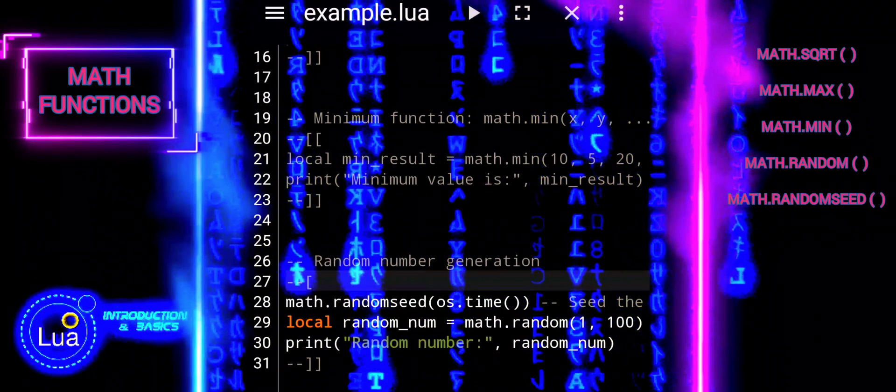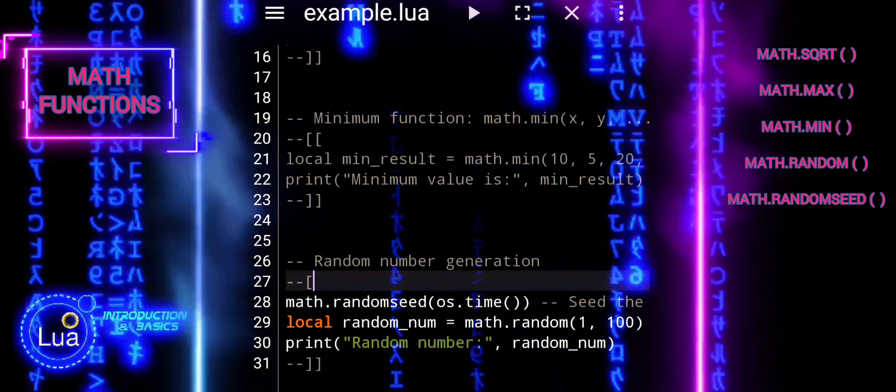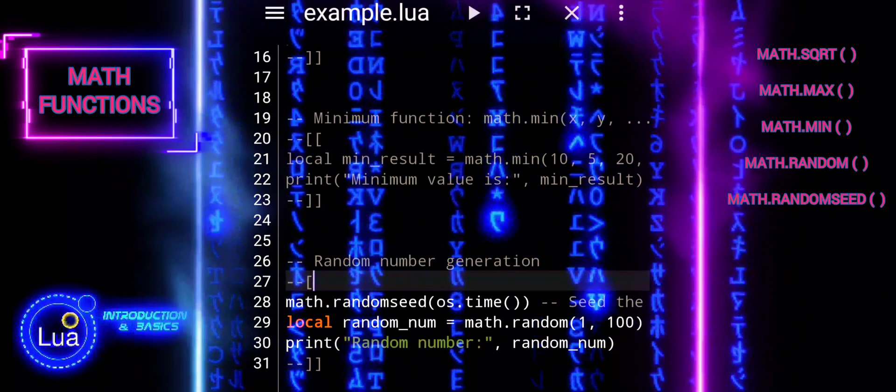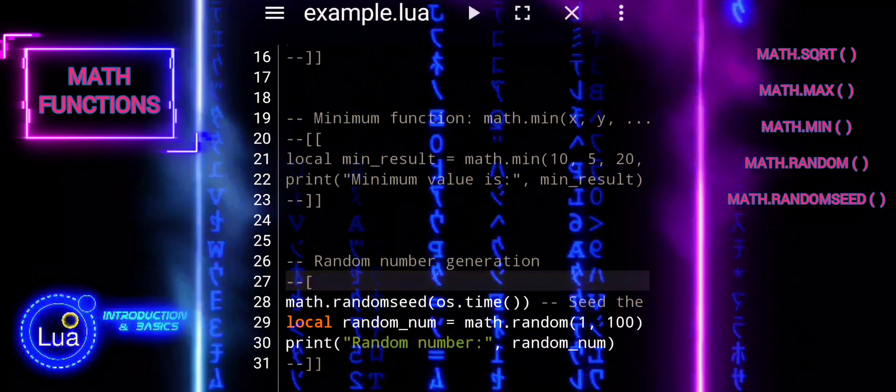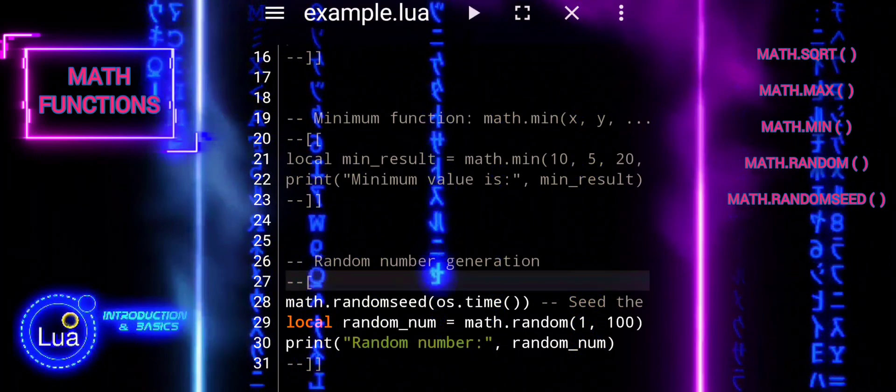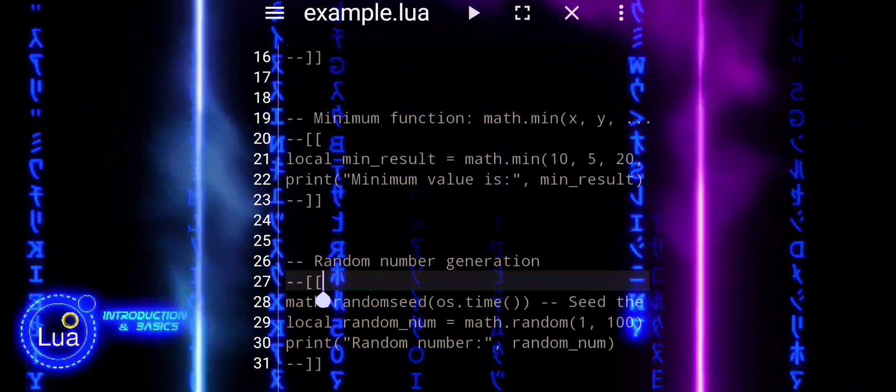Random numbers are commonly used in various applications, such as generating random values for simulations, games, cryptographic functions, and more. In summary, this code snippet demonstrates how to generate random numbers in Lua, a fundamental feature often used in programming for randomness and unpredictability.